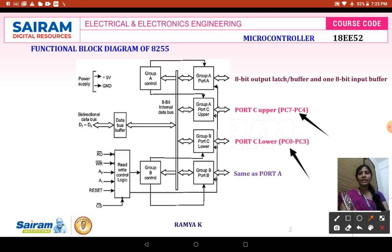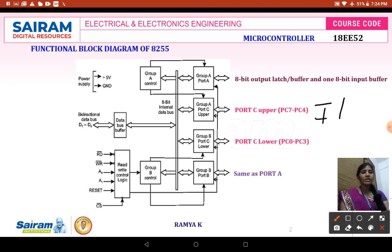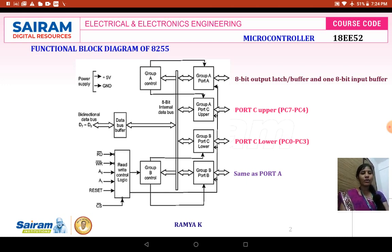The 8255 is an 8-bit bi-directional IO port with 24 IO lines, which can be configured in any one of the modes of operation. Port A contains an input/output port where data can be latched or stored — meaning data can be extracted from Port A or stored into it. That is the meaning of latch and buffer.